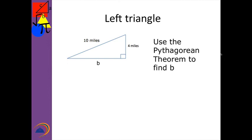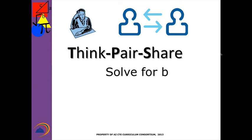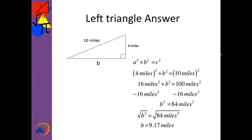Welcome back. Let's look at the left-hand side. The left-hand side has 10 miles in the slanted or diagonal direction and 4 miles in the vertical direction, and I called the base B. With your partner, solve it for B to two decimal places. Welcome back — let's check. One side was 4 miles. The 10 miles is actually the hypotenuse, so I put it in for C. 4 squared is 16 miles squared. 10 squared is 100. I subtracted 16 from both sides and got B squared equals 84. Took the square root: approximately 9.17 miles.